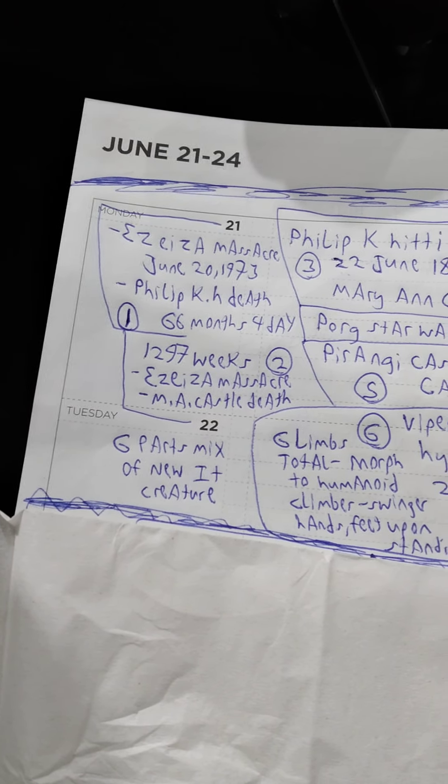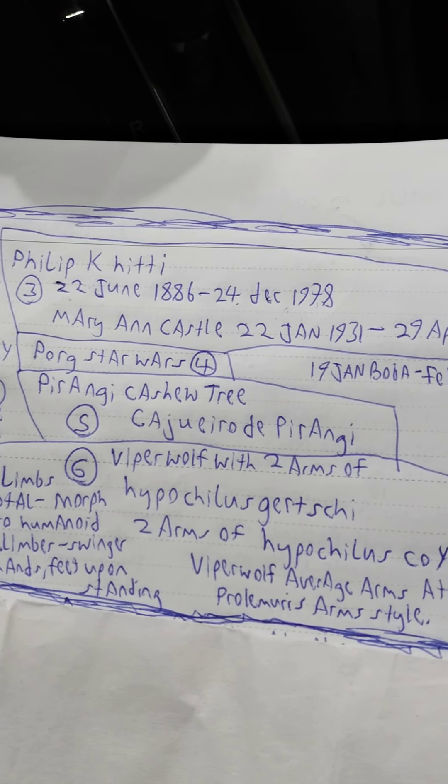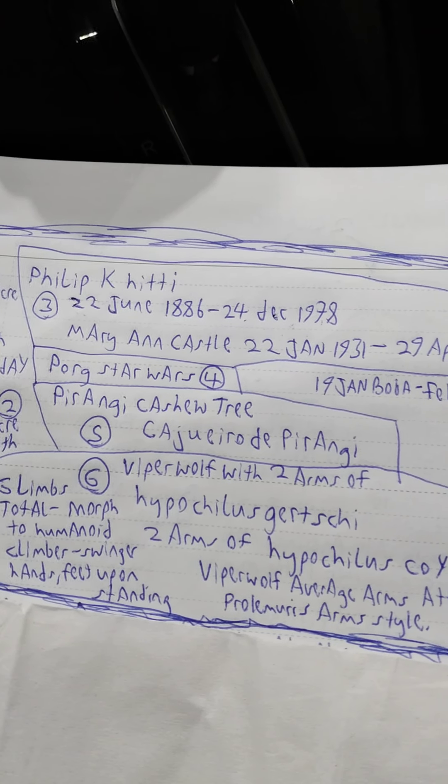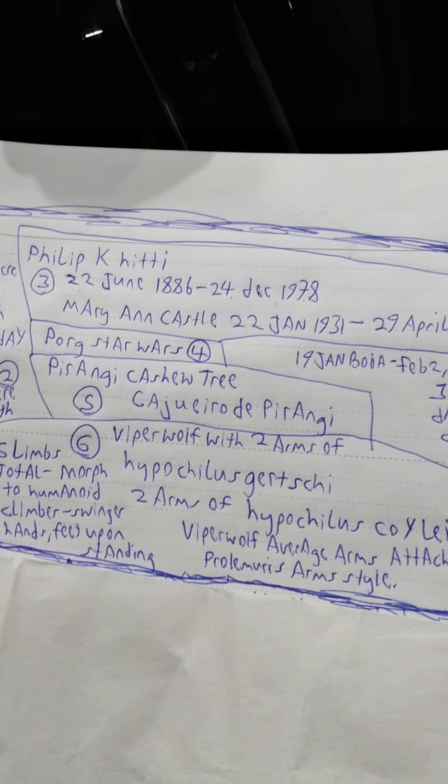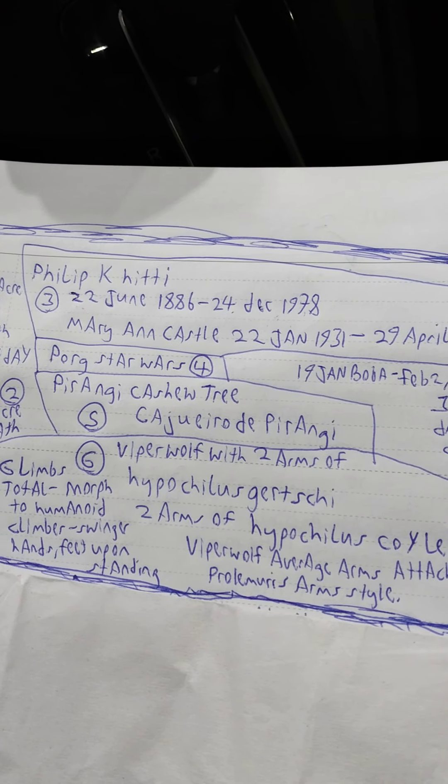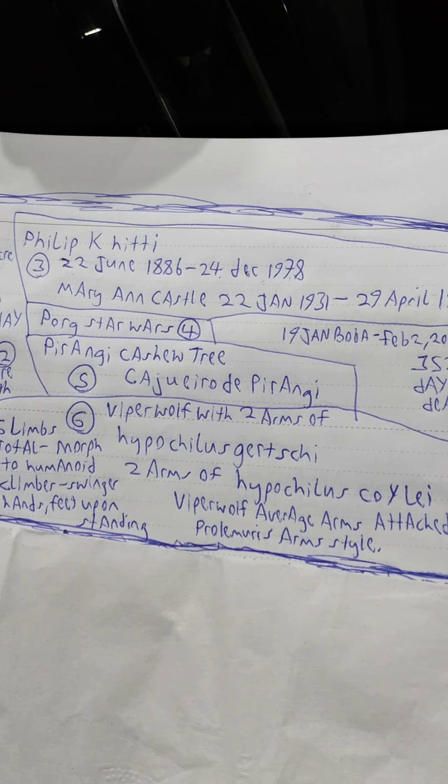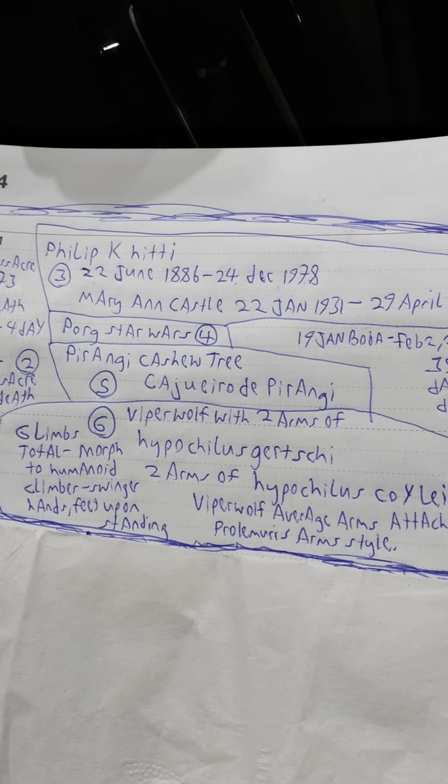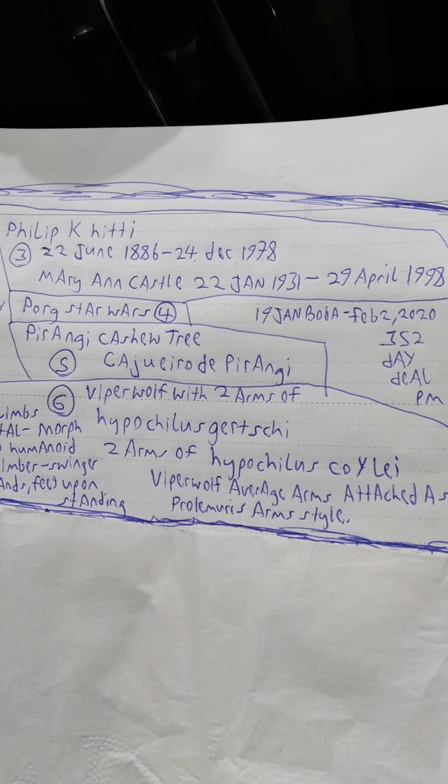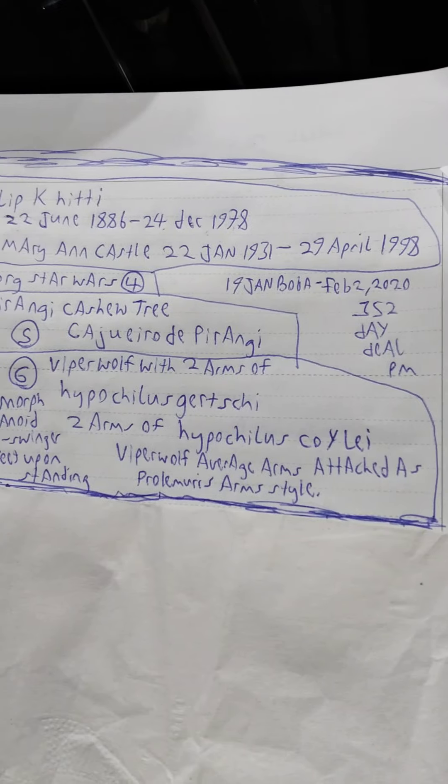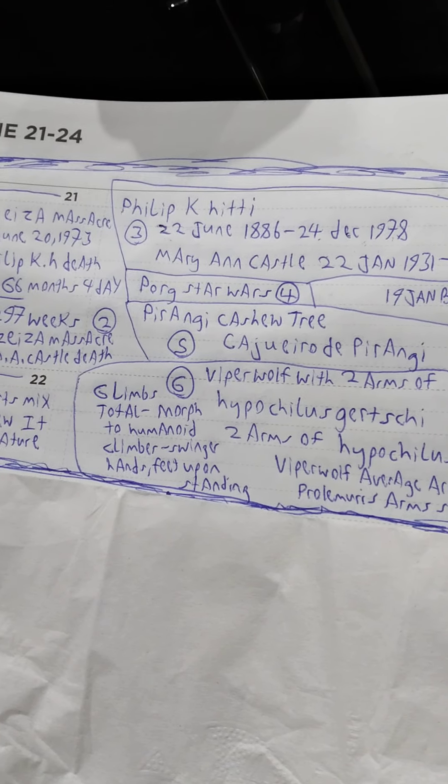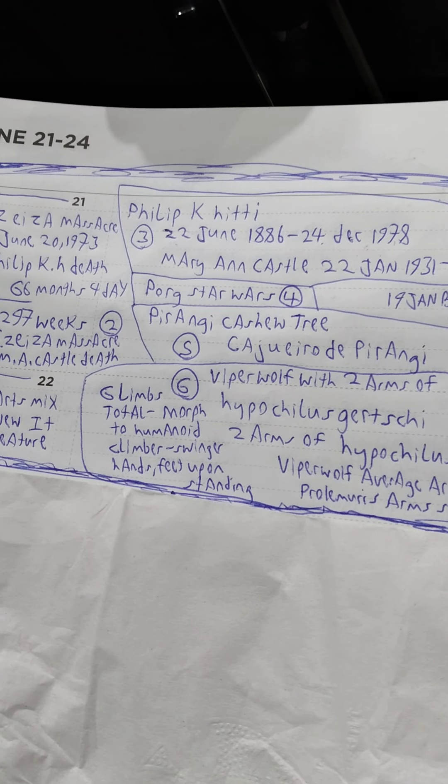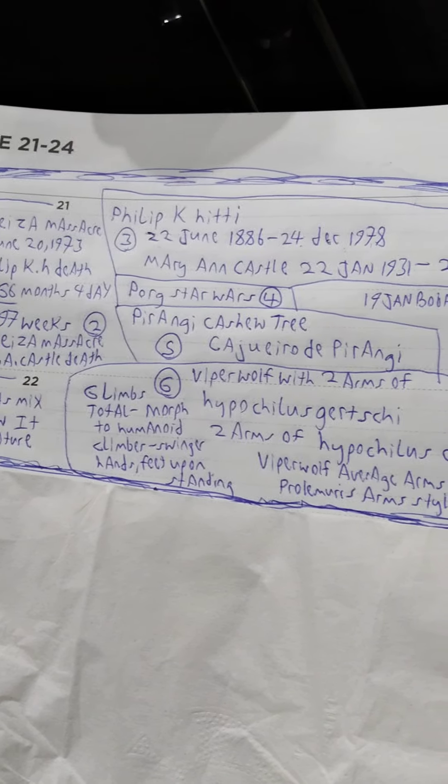These are the six parts mix of new it creature. The other parts, Philip K. Hitty, his dates are there. And Marianne Castle, her dates are there. Porg Star Wars is another part. Perangi Cashew Tree, that's the Latin name under that. That's five. And Viper Wolf with two arms of Hypochilus Gertschi, two arms of Hypochilus Coily. Viper Wolf average arms attached as Prolimerous Arms style. So it's six limbs total, like four spider and two of the normal Viper Wolf. They morph to humanoid climber swinger hands, feet upon standing. They morph to that.